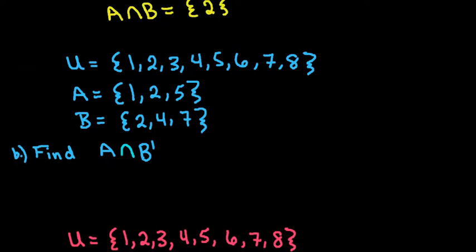So moving to the next one. For this one, we have again the same numbers 1, 2, 3, 4, 5, 6, 7, and 8. Set A is the numbers {1, 2, 5}. Set B is the numbers {2, 4, 7}.